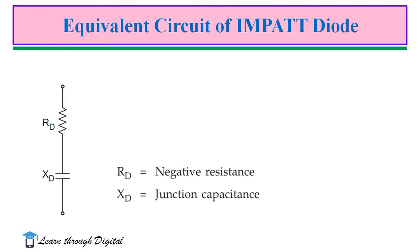This figure illustrates the equivalent circuit for the IMPATT diode. The negative resistance Rd is in series with the reactance Xd. The package is described by a series inductance Lp and a shunt capacitance Cp. The value of Lp is changed by the microwave circuit surrounding the diode.